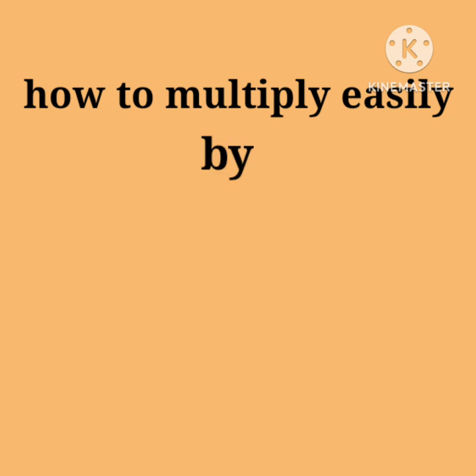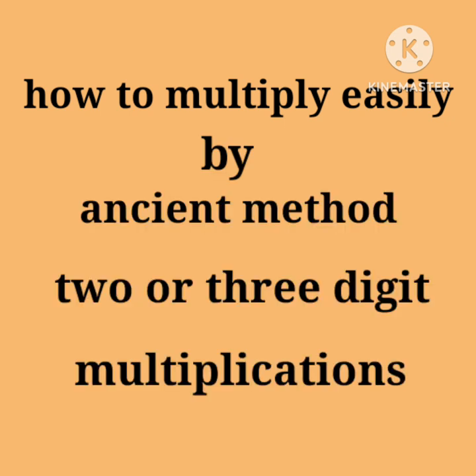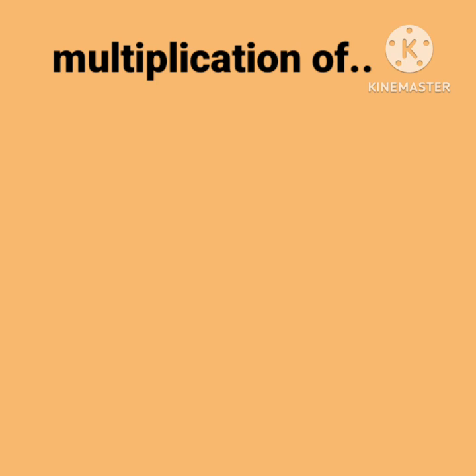How to multiply easily by ancient method: 2 or 3 digit multiplications. First we take multiplication of 35 times 12.